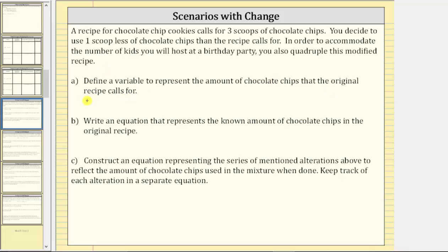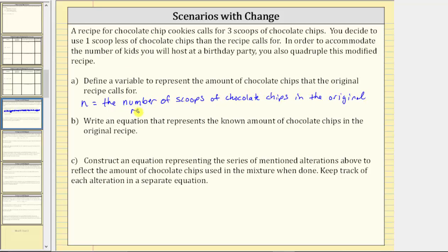Let's use the variable n. We will say n equals the number of scoops of chocolate chips in the original recipe. For part B, write an equation that represents the known amount of chocolate chips in the original recipe. The original recipe calls for three scoops of chocolate chips, and therefore the equation that represents this known amount is n equals three.